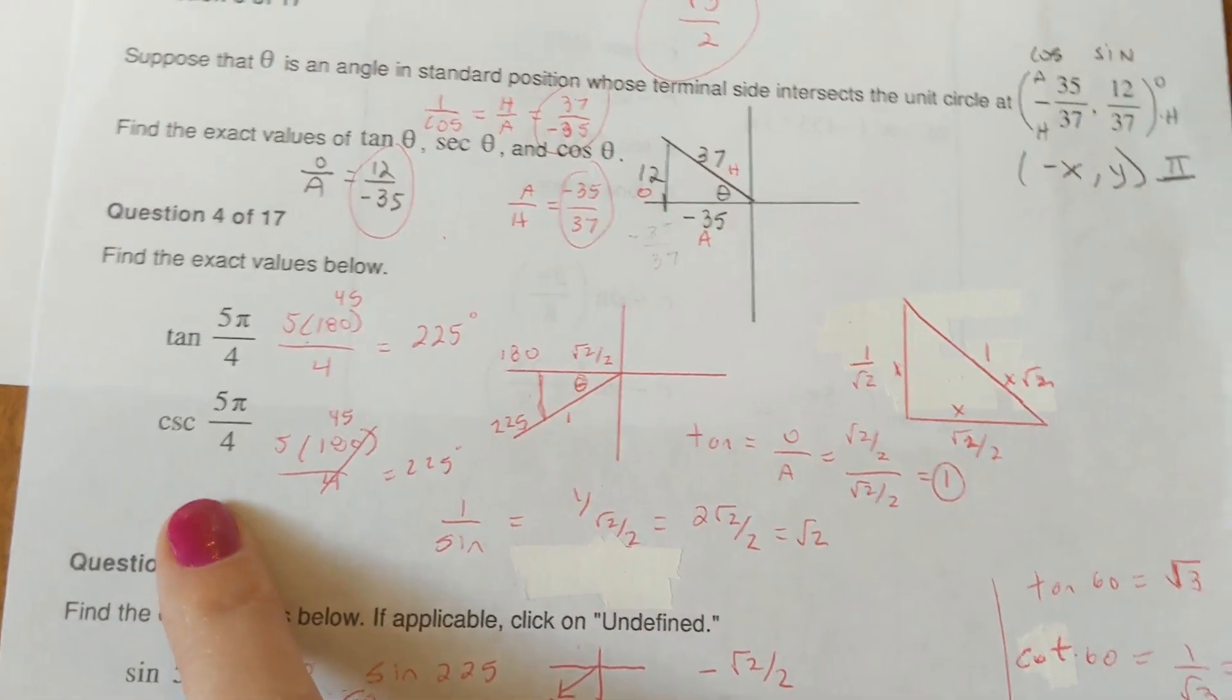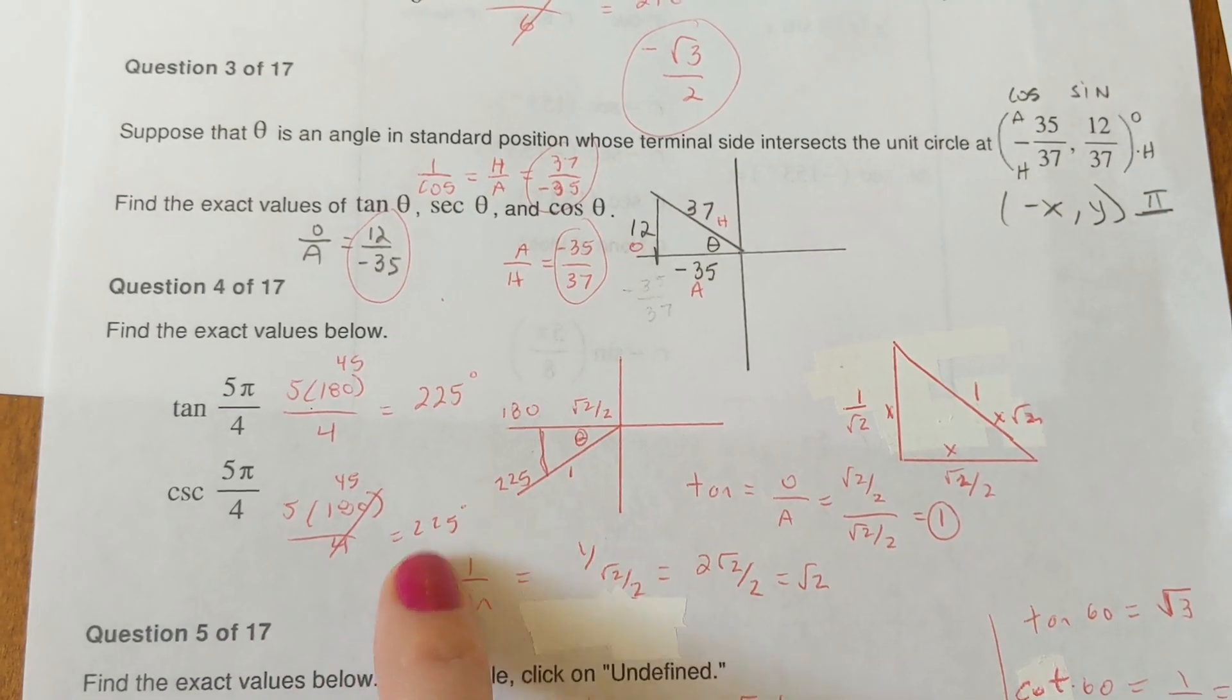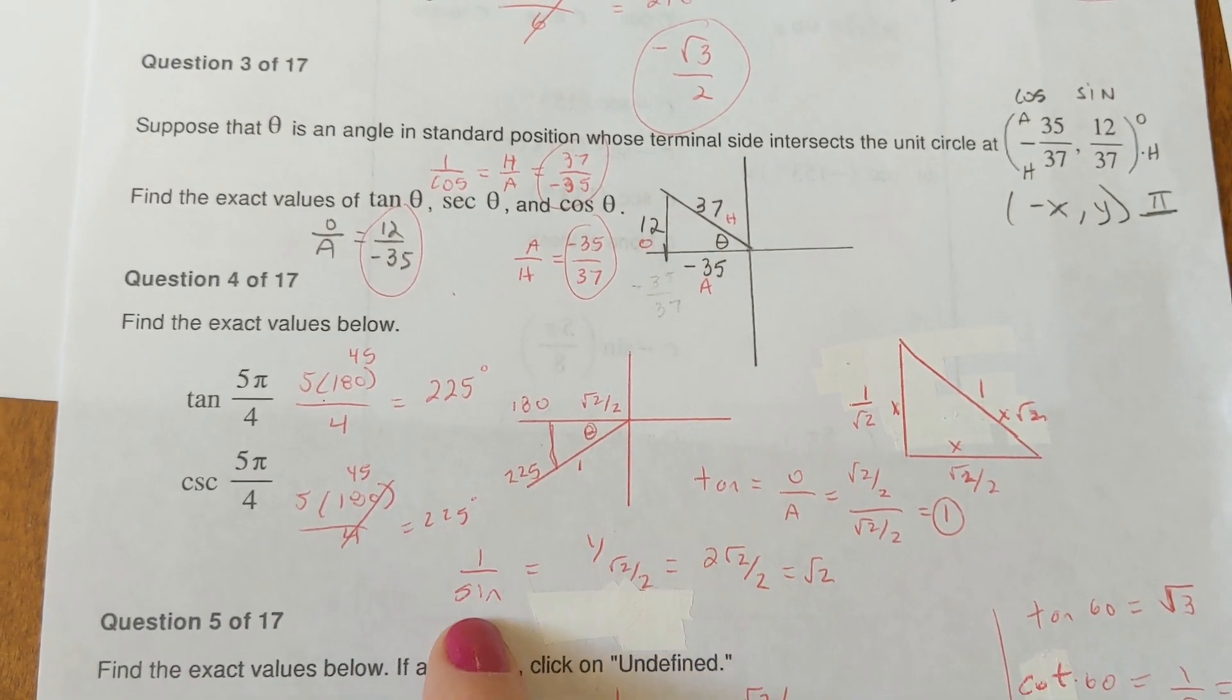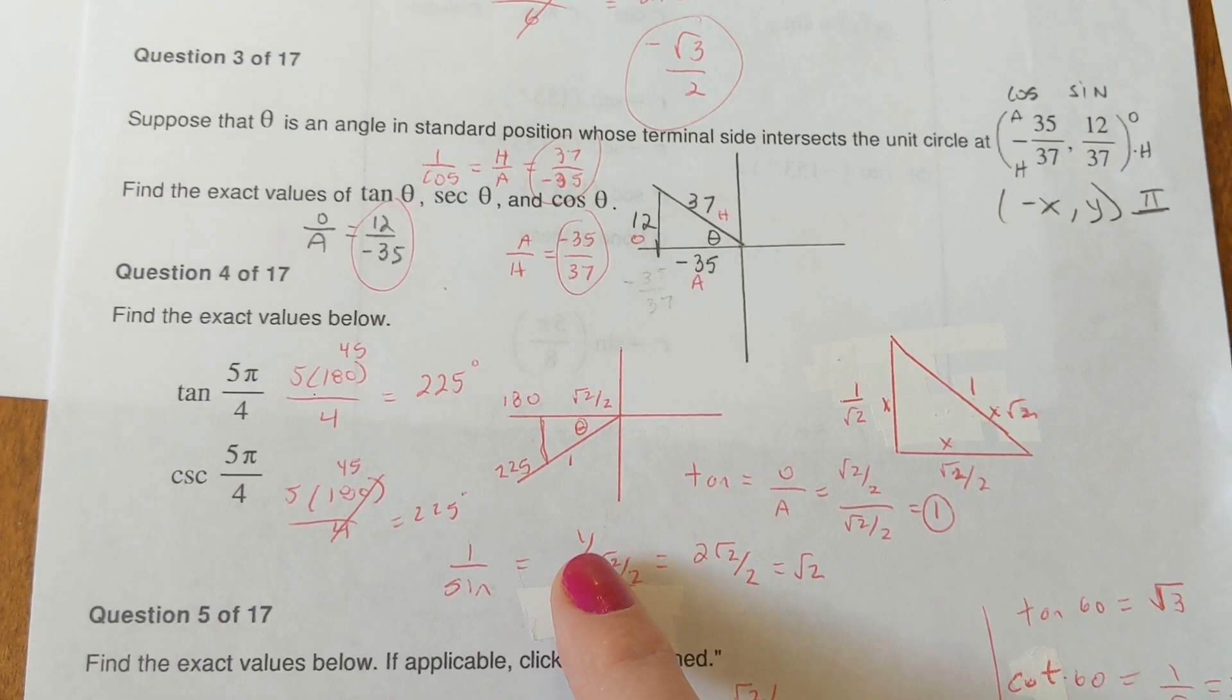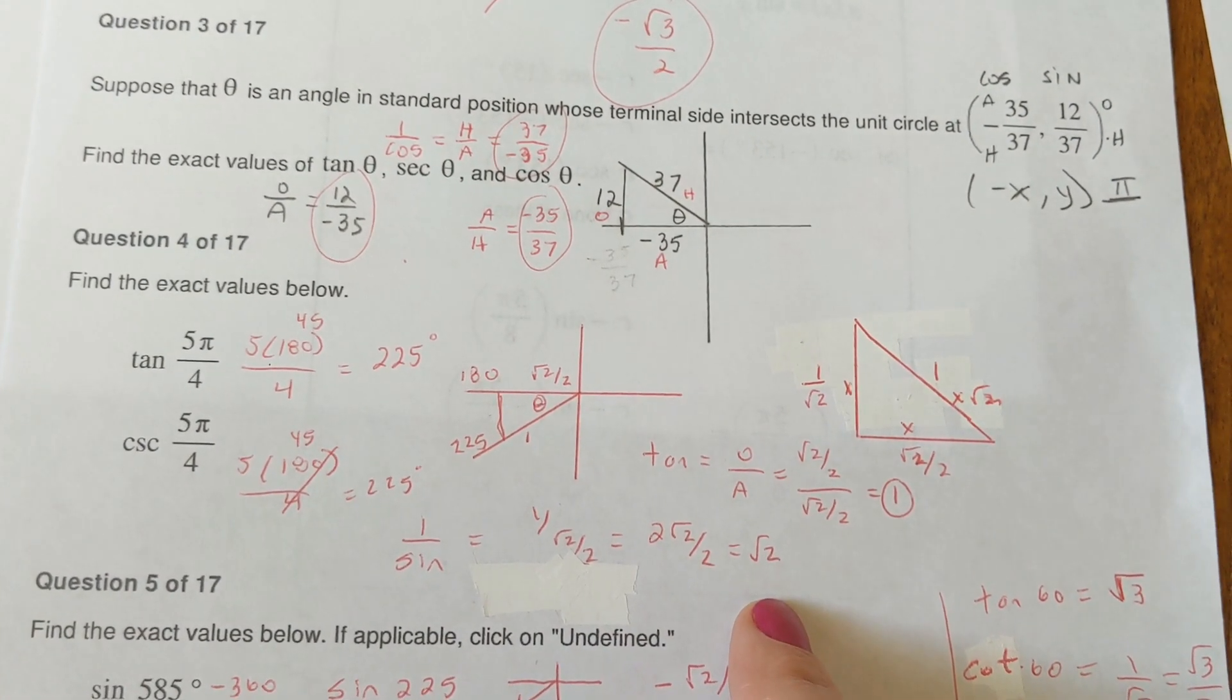Cosecant is the inverse of sine. And it's over 4, so it's a 45. And it's 225 again. And so 1 divided by sine. And sine of 45 is radical 2 over 2. So clean it up. And you get the answer then is radical 2.